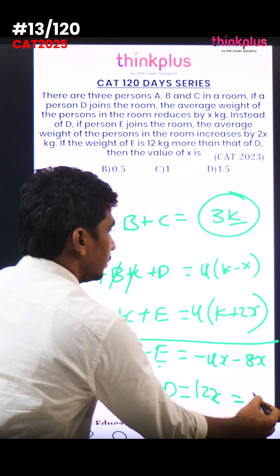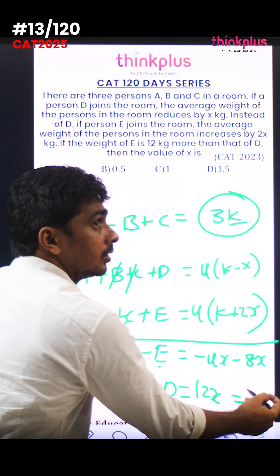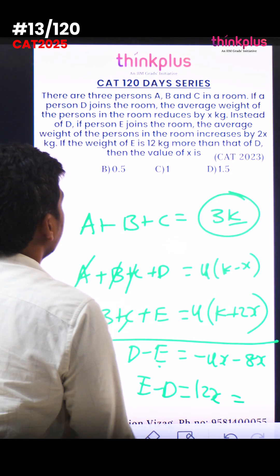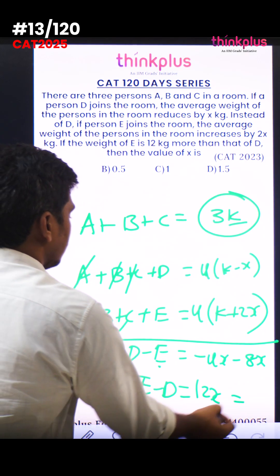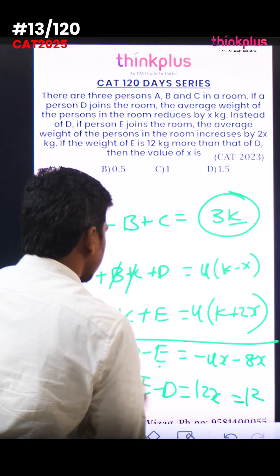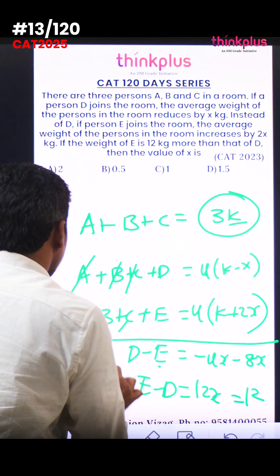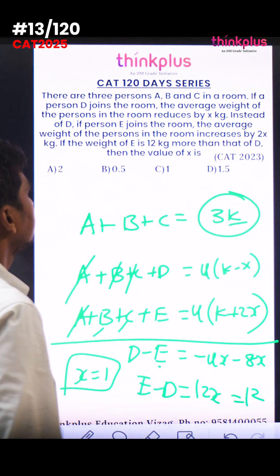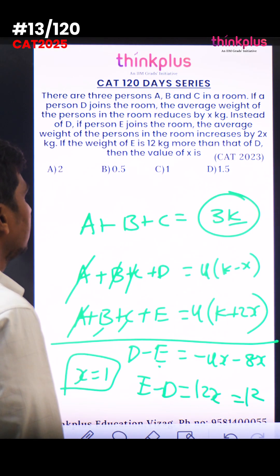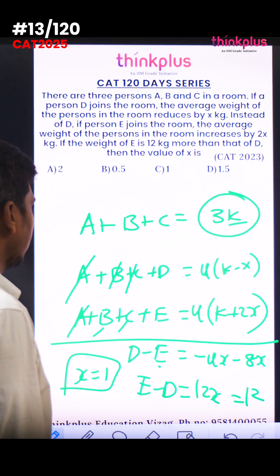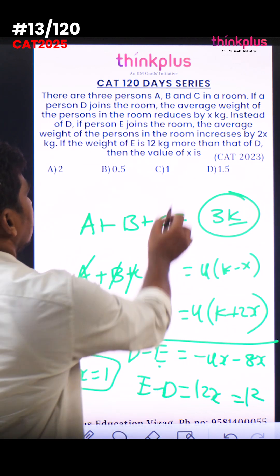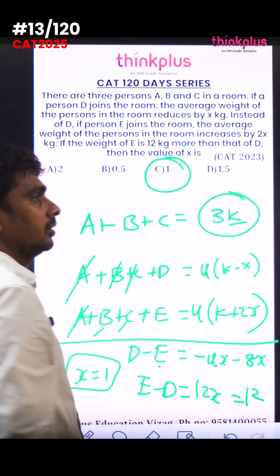E equals D plus 12, so 12X equals 12, therefore X equals 1. The value of X is 1.